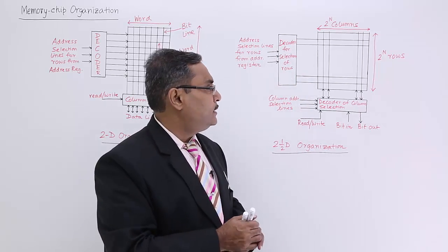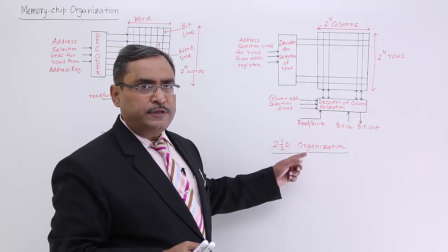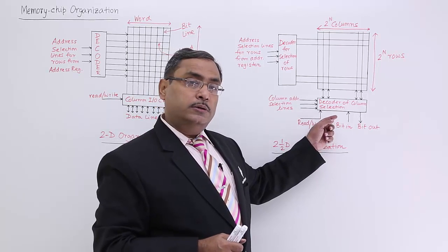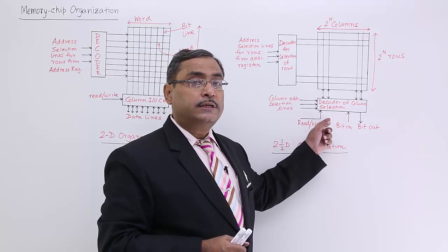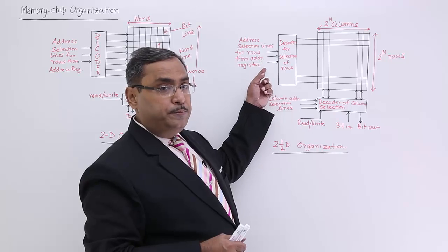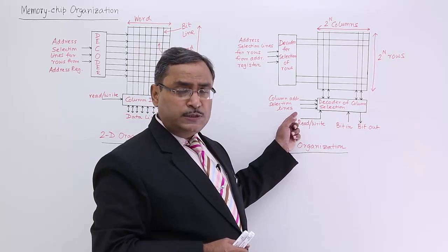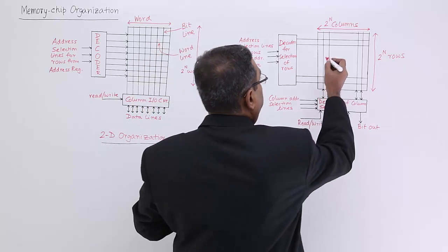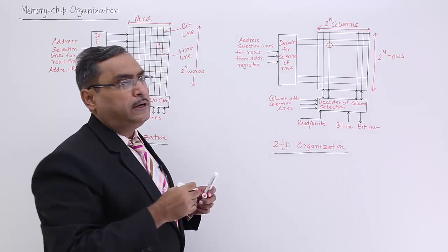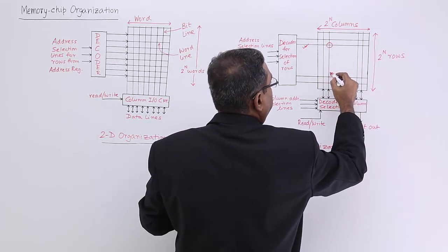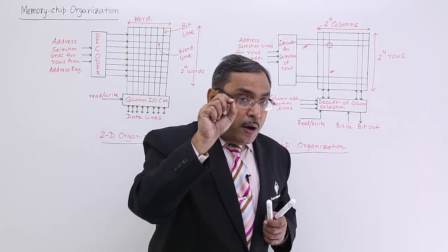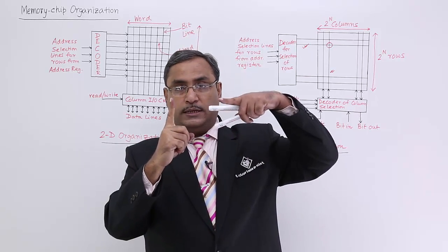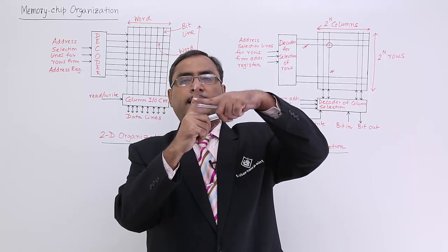Now let us look at the 2 and half D organization. Here we have the same scenario, but we also have column decoder bits. In the column, we have one decoder instead of a column IO circuit. Depending upon the bits in the row decoder input and the column decoder input, one output line from each gets selected, and that selects a particular cell — a single bit at the intersection of a row line and a column line.